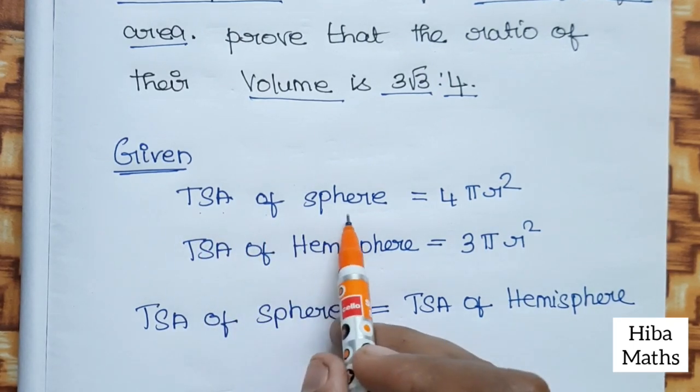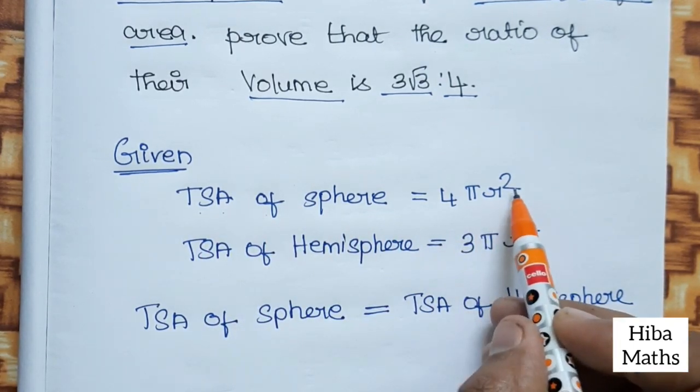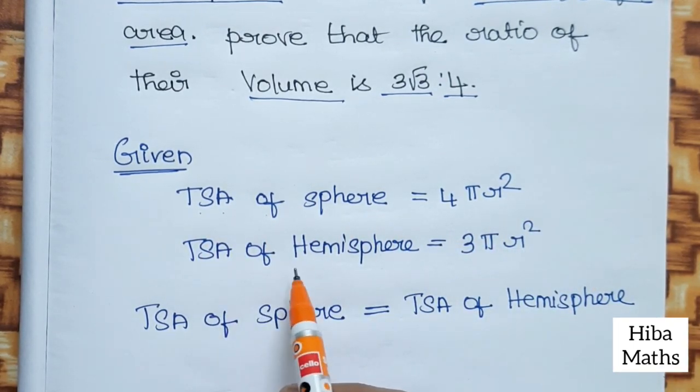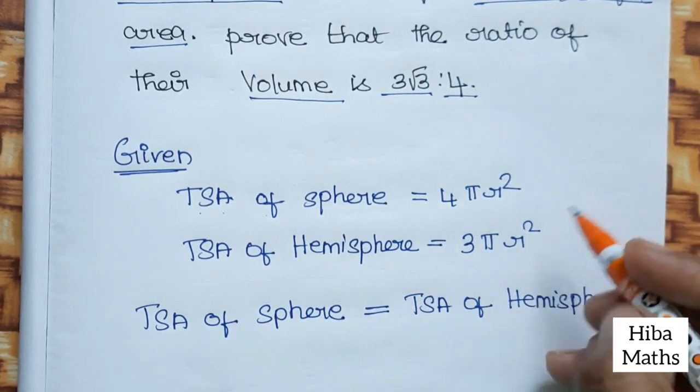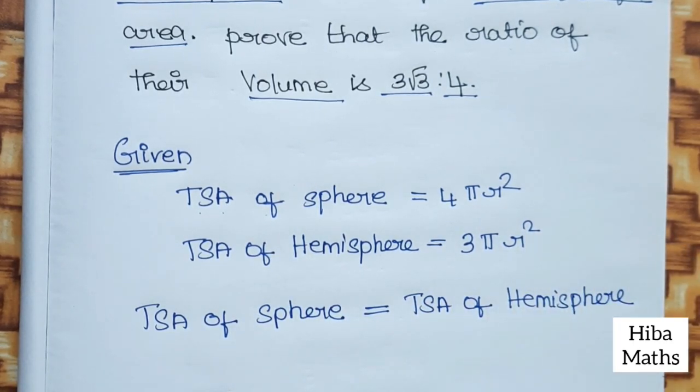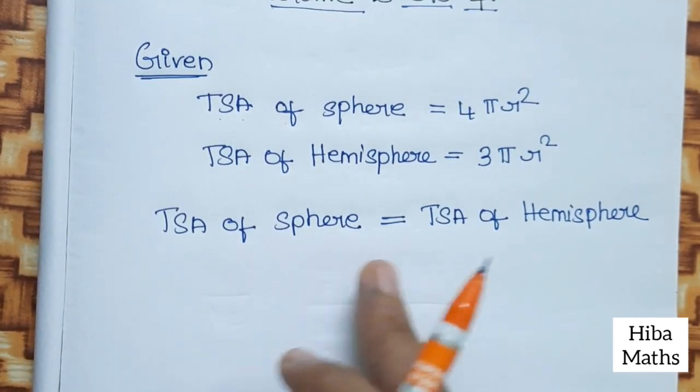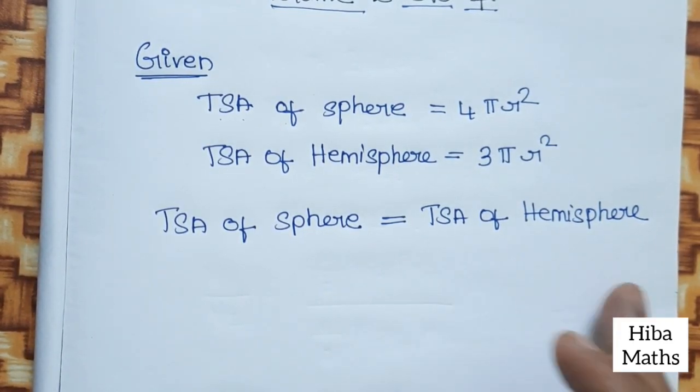TSA of sphere is 4πR₁². TSA of hemisphere is 3πr₂². So the two values are equal: TSA of sphere equals TSA of hemisphere.